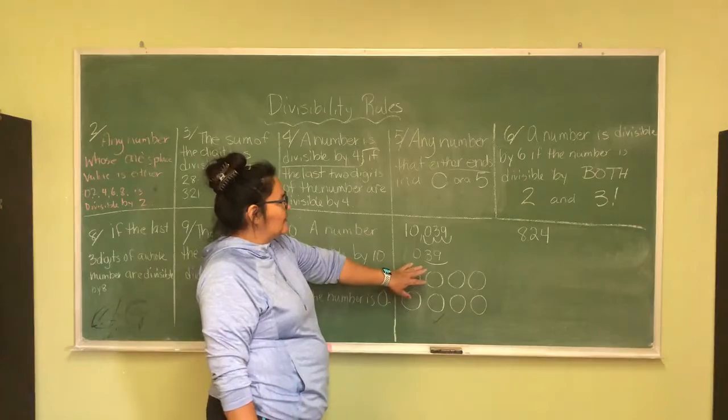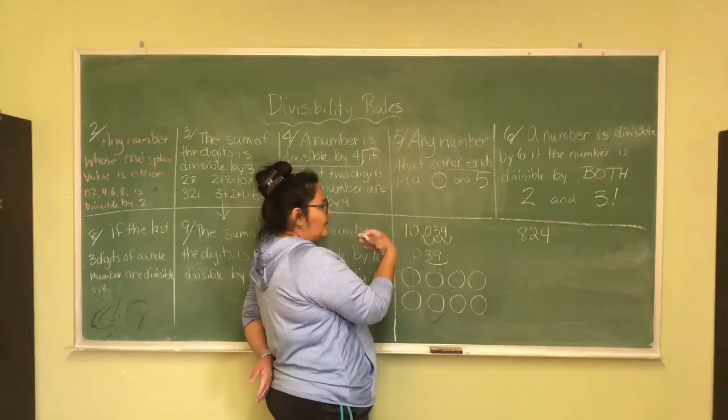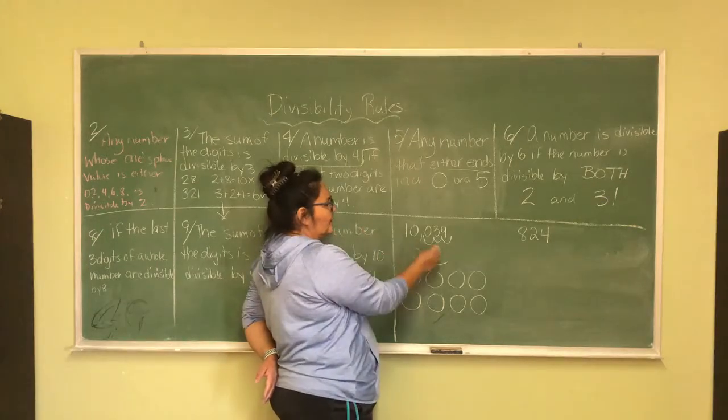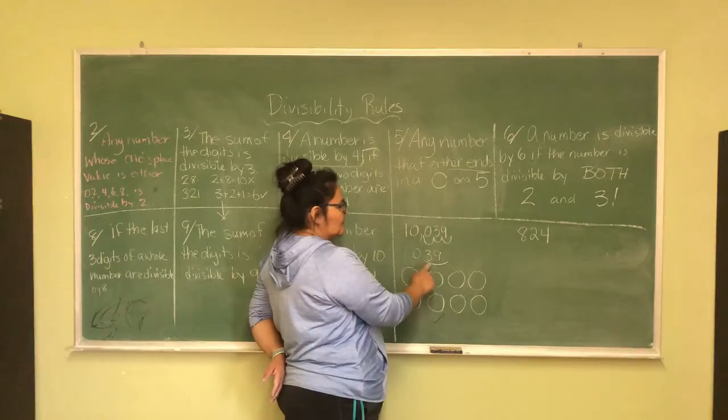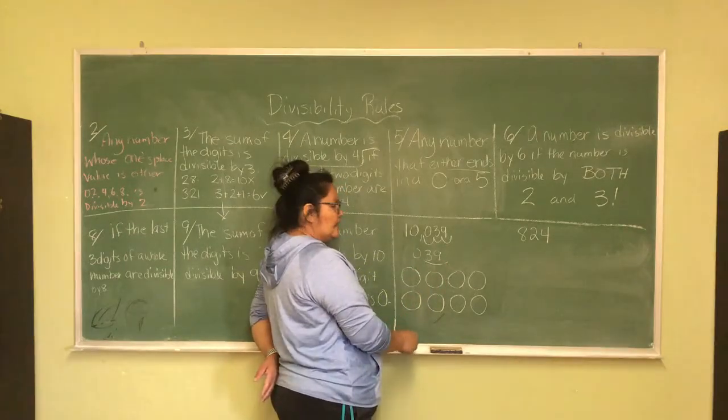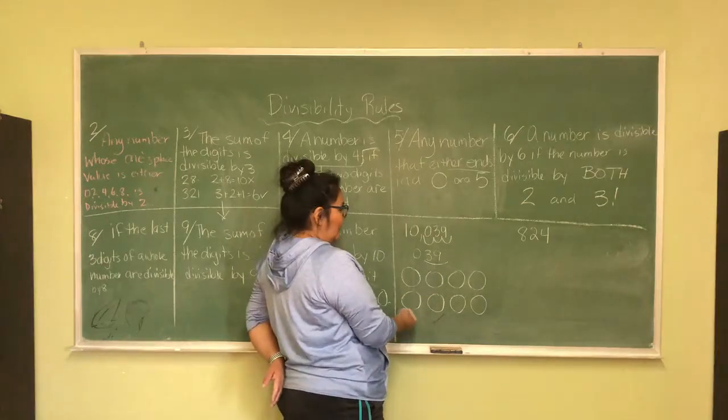But let's go back to 10,039. So, 10,039, according to the rule here, it's that the last three digits, which is 0, 3, 9, which is 39, we're going to break it down into groups of 8, and to see if that's divisible by that.